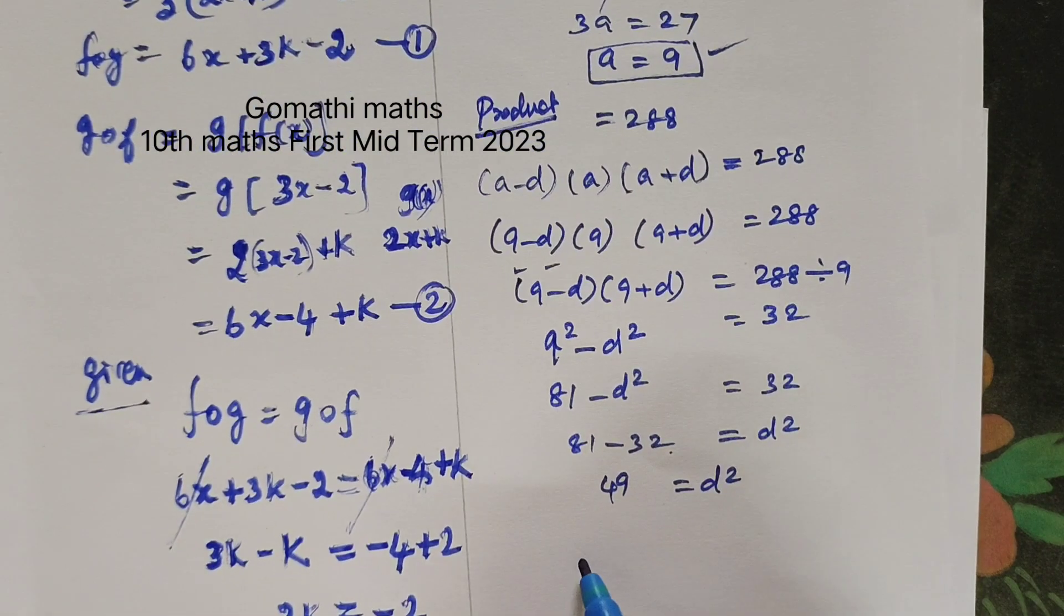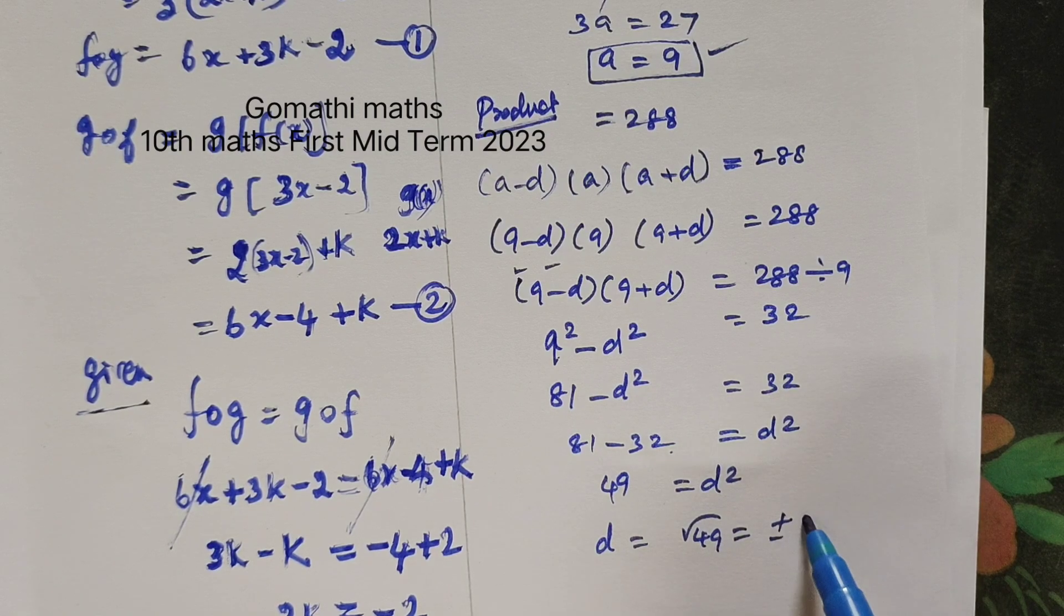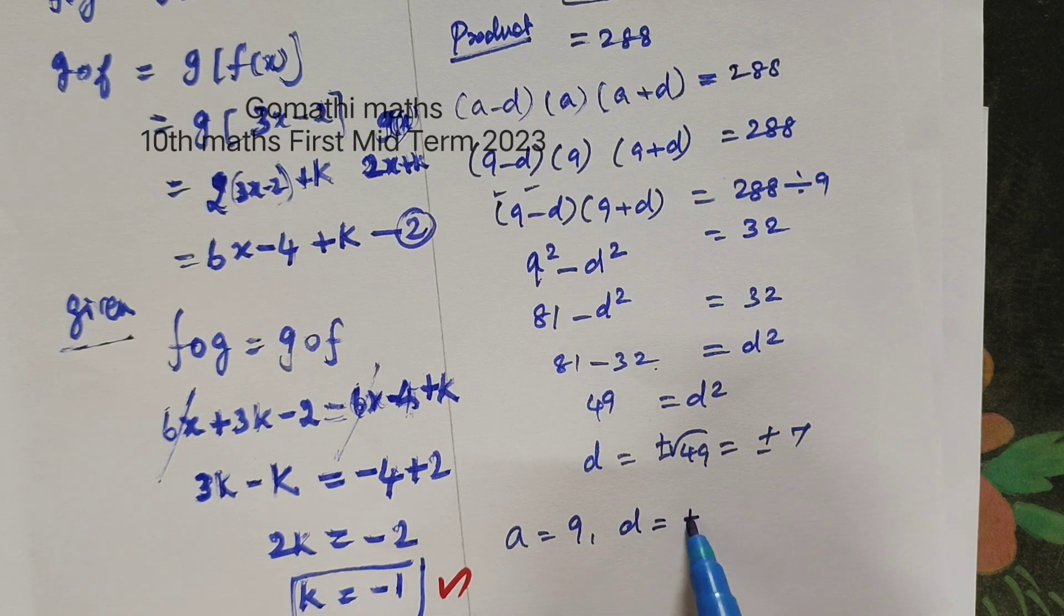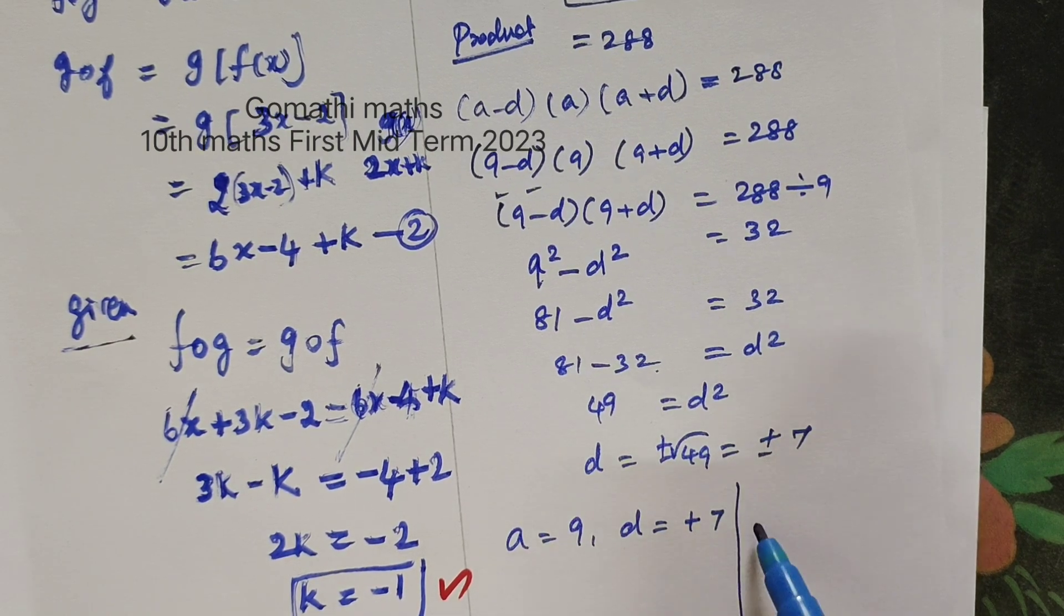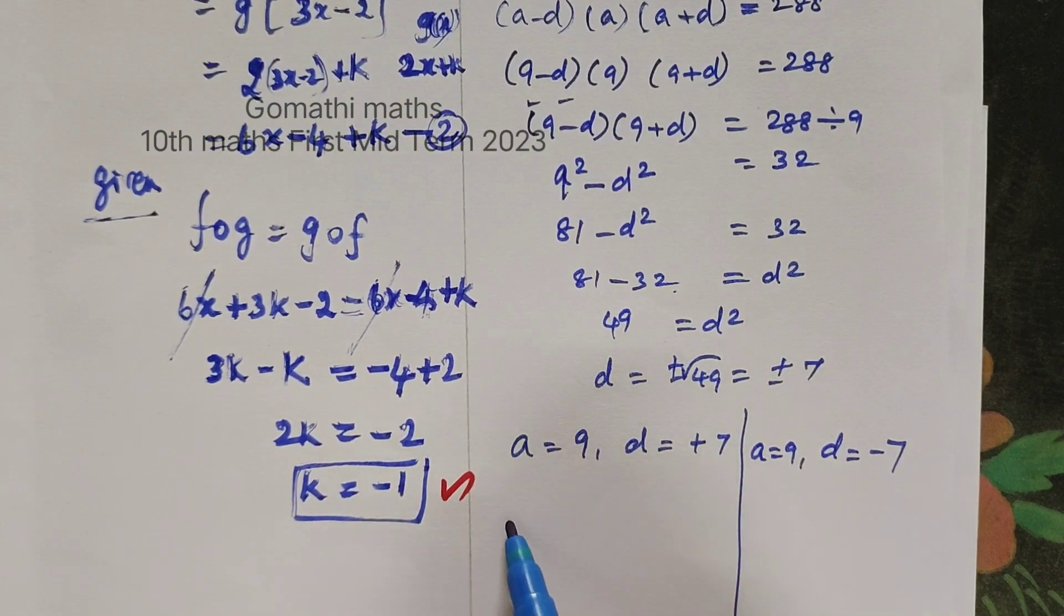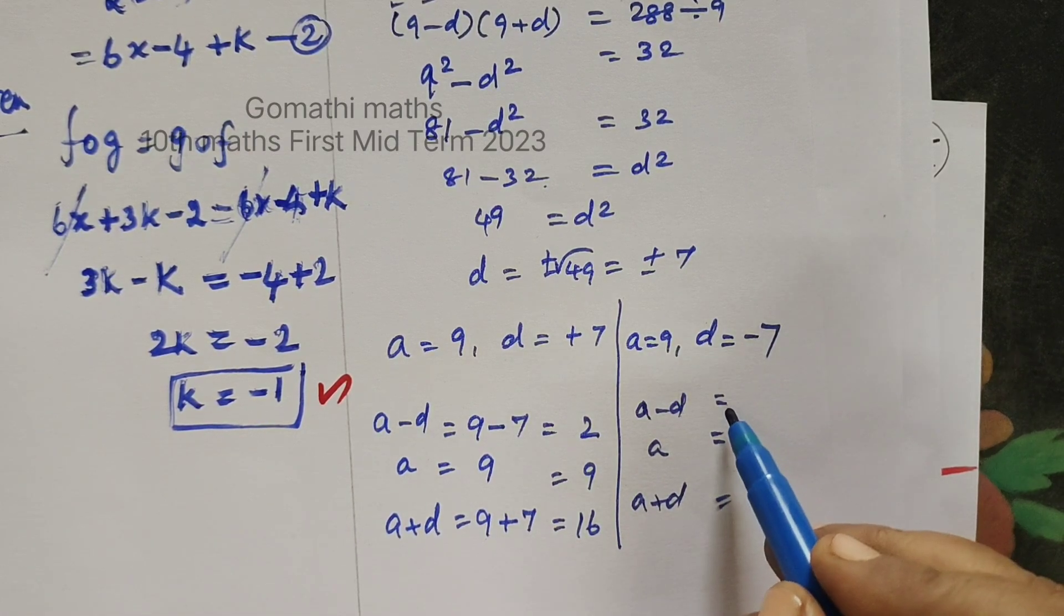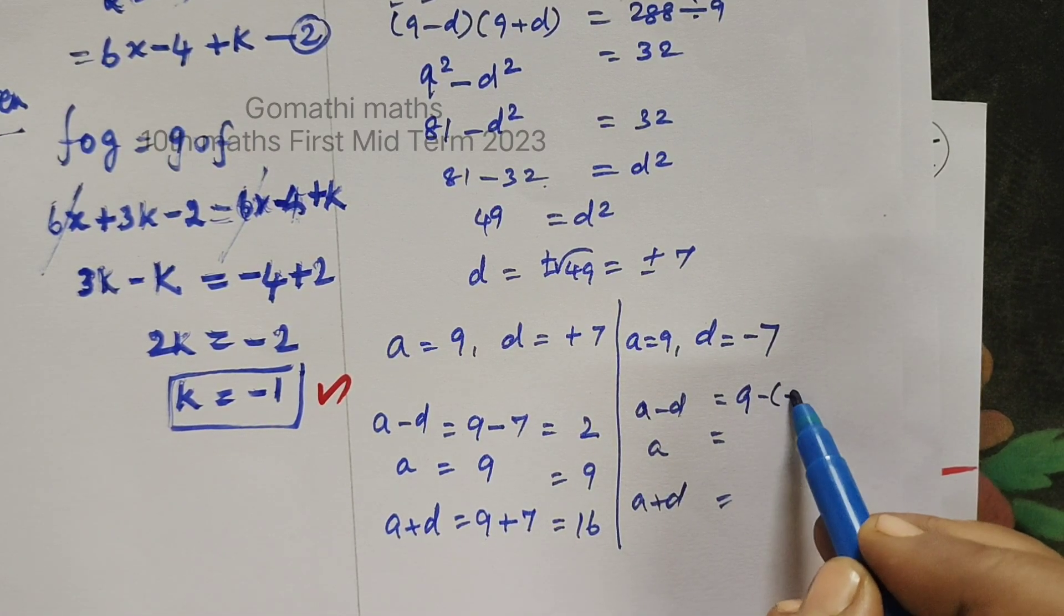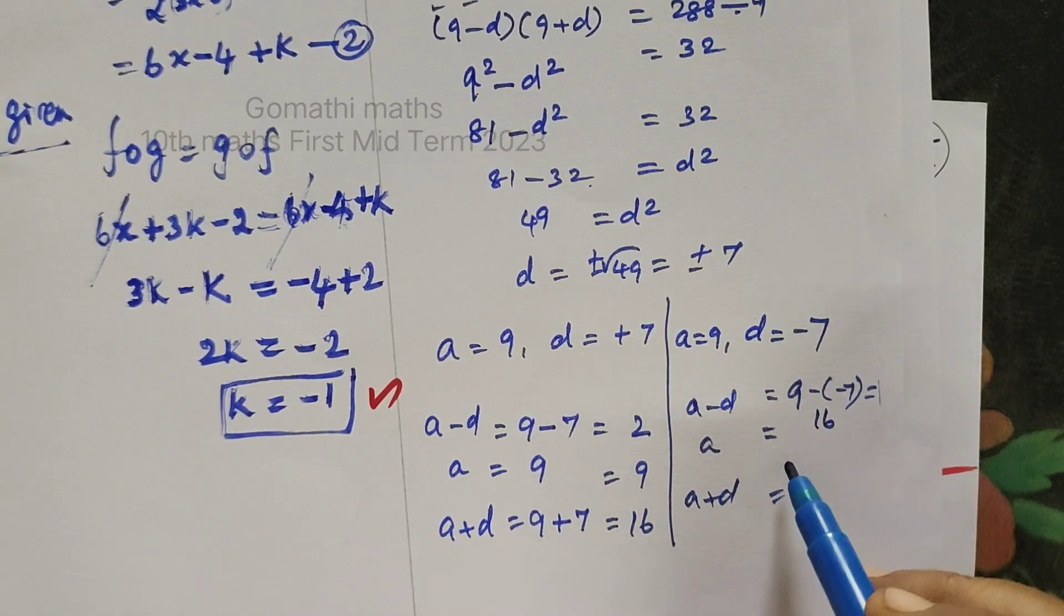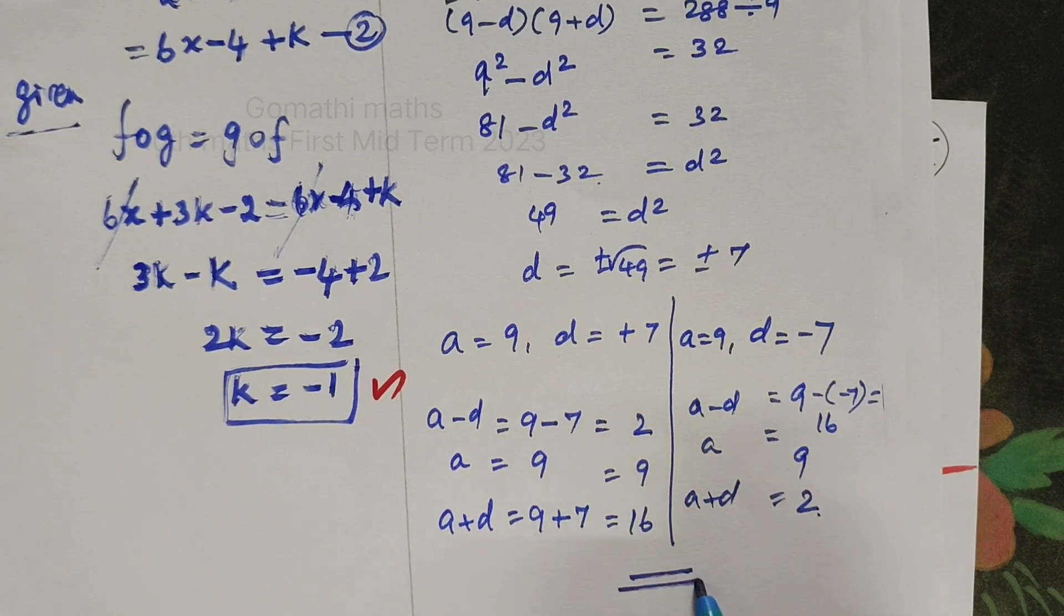Therefore d equal to root of 49 equal to plus or minus 7. When a equal to 9, d equal to plus 7. When a equal to 9, d equal to minus 7. a minus d, a, a plus d. 9 plus 7 equal to 16. 16, 9. That's the answer.